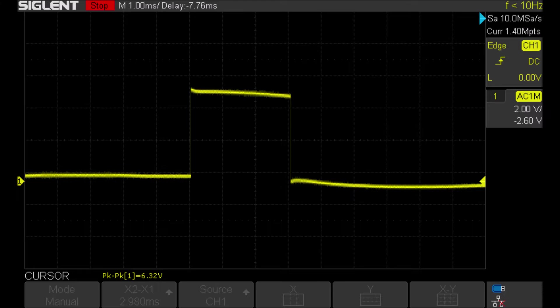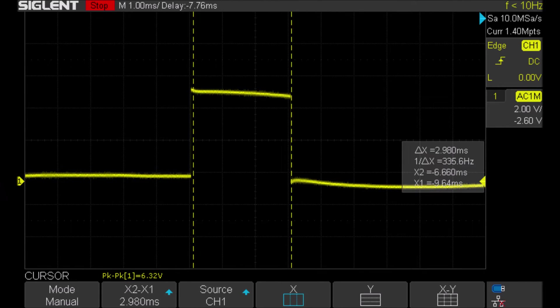Here's the pulse on the scope, it looks good. Nice sharp rising edge, very little overshoot. I'll put a couple cursors on there. It says that it's 2.98 milliseconds. Now I calculated it to be 3.5, but the capacitors are at 10 percent, the resistor is 5 percent, so we're in the ballpark.